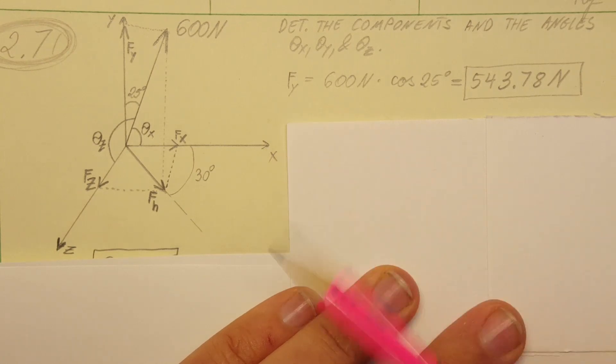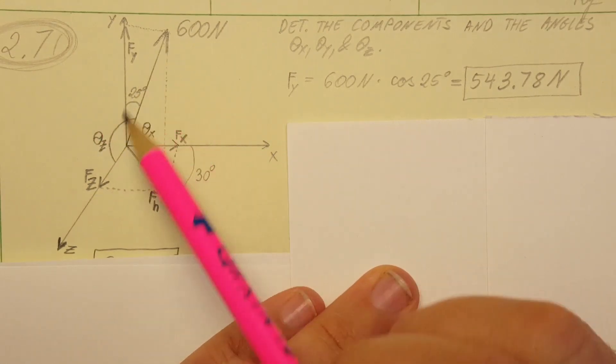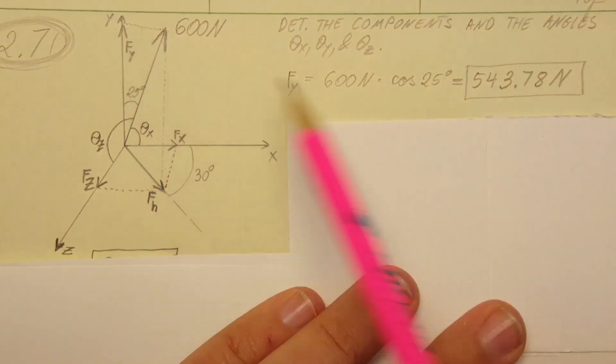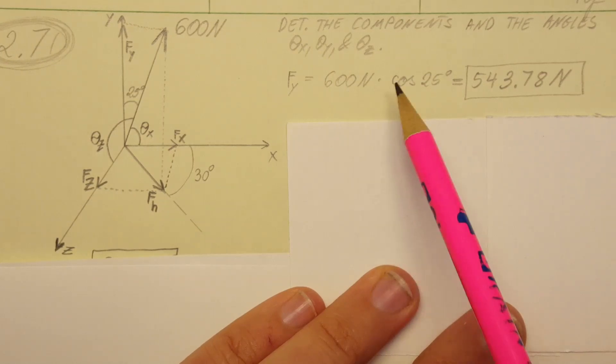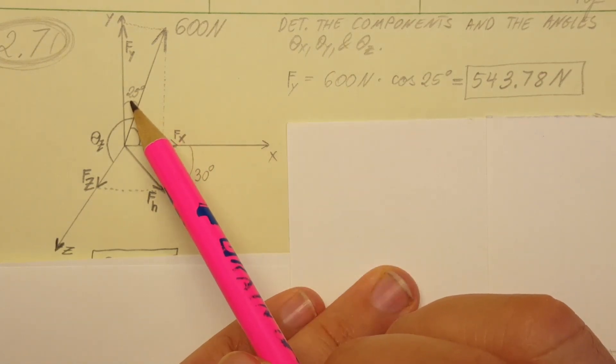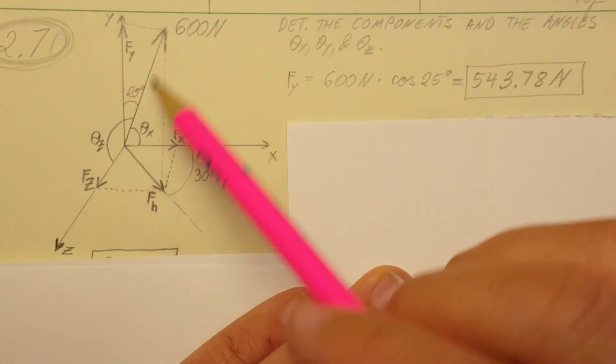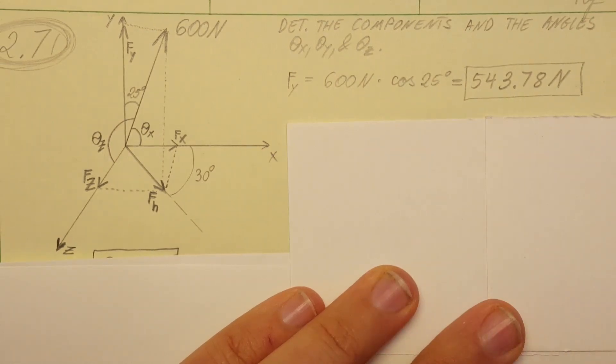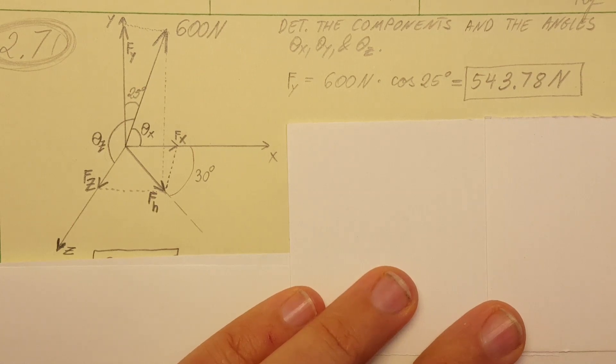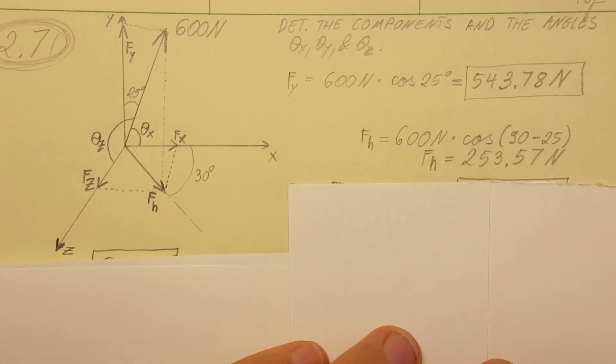First we're going to use it on fy. Fy right here will be f times the cosine of 25 degrees. I went ahead and plugged in 600 for our force, and with the calculator we can get 543.78 newtons.